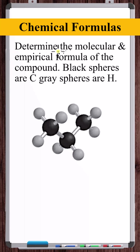Determine the molecular and empirical formula of the compound shown. Black spheres are carbon and gray spheres are hydrogen. The molecular and empirical formulas are chemical formulas which express the composition of a substance — what elements are present and in what proportions.